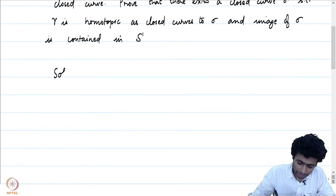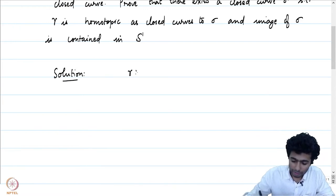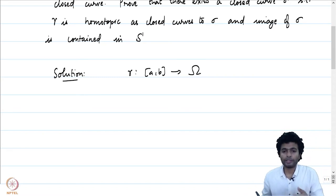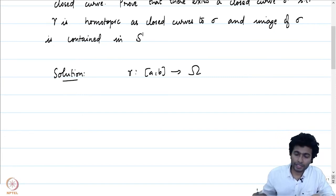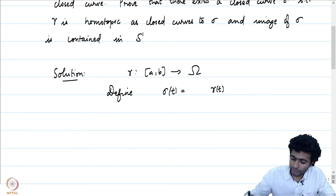The solution is quite straightforward. We start with gamma, a closed curve in omega. Because omega is C minus {0}, gamma(t) ≠ 0 for every t in [a,b]. So define sigma(t) = gamma(t) / |gamma(t)|. Because gamma(t) ≠ 0, this makes complete sense and is a continuous function from [a,b] into omega.